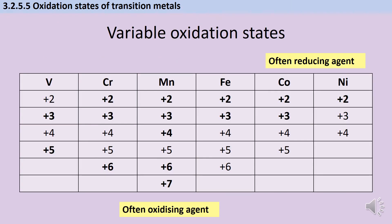Here are some examples of the variable oxidation states of some transition metals in the fourth period of the periodic table. It's interesting to note that whereas vanadium, like titanium, produces stable three-plus ions and is far less stable as a two-plus ion, as we move left to right across the period the plus-two oxidation state becomes comparatively more stable while the plus-three becomes less stable. There's a general tendency for transition metals on the right-hand side of the d-block to form plus-two ions.